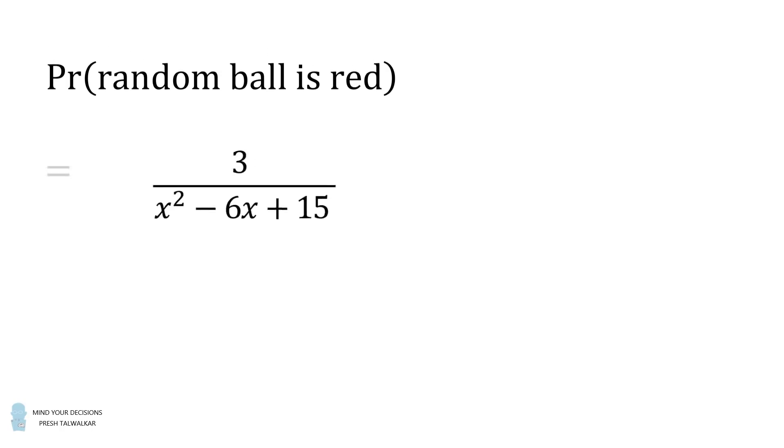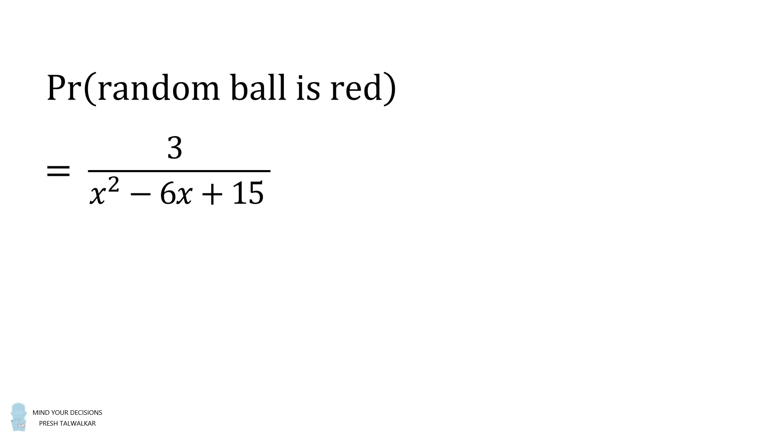This is the probability that the randomly chosen ball is red. We want to maximize this probability. To do that, let's look at the denominator x squared minus 6x plus 15.